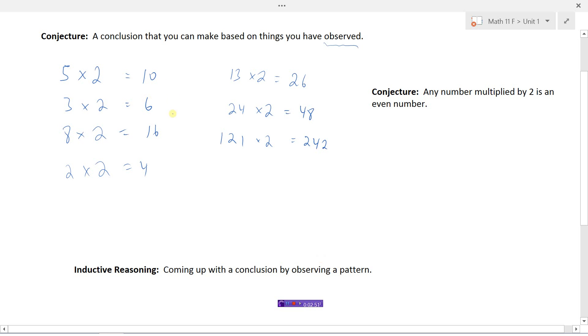And so that's what was going on here. That's what enabled me to make this conjecture is I saw a pattern here. Every time I multiplied by 2 it was an even number. So I used my inductive reasoning to say anytime I multiply a number by 2 I get an even number.